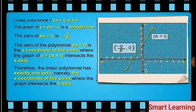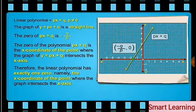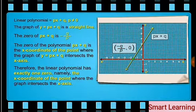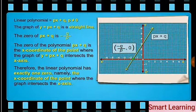Therefore, the linear polynomial has exactly one zero — namely, the x-coordinate of the point where the graph intersects the x-axis. As it can intersect the x-axis at one point only, the linear polynomial has one zero only.